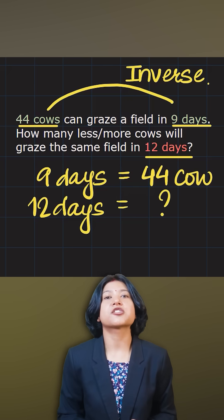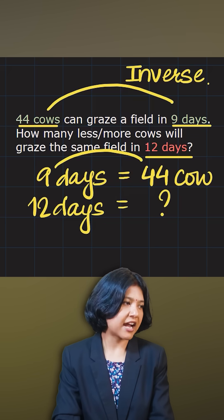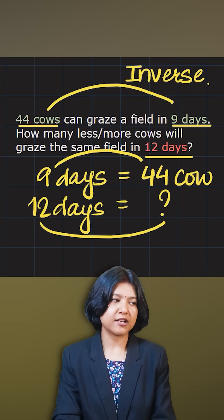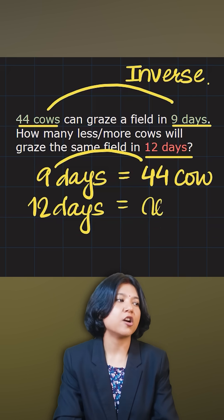When you have figured out that the relation is inverse, what you should do is understand that whatever the product of 9 times 44 is, the same will be the product for 12 times something. So I'm saying the number of cows here is x. So not cross multiply.